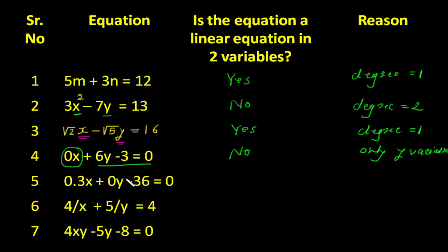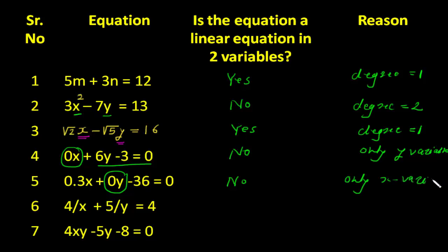In case 5: 3x plus 0y. The term 0y becomes 0, so the answer is no, and the reason is only the x variable remains.